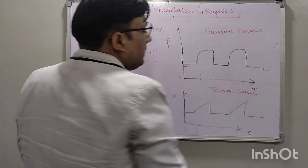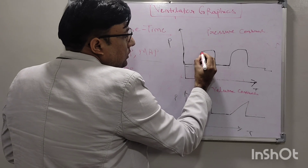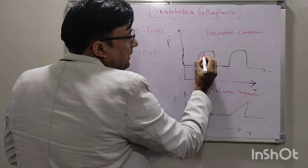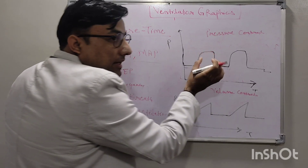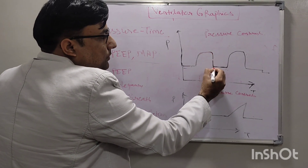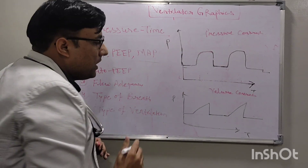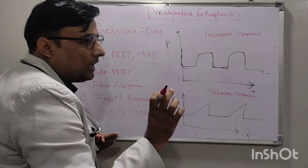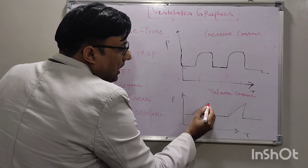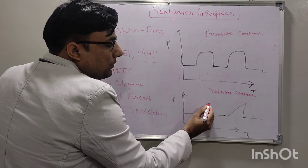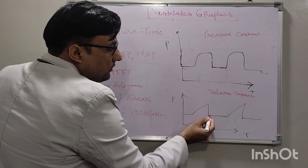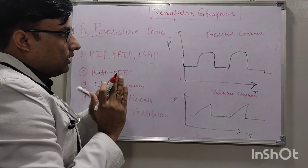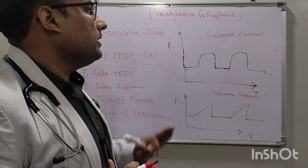In pressure control, we are controlling the pressure, so pressure reaches the set PIP and is maintained for the inspiratory time — producing a plateau — and then drops to expiration, giving a rectangular shape. In volume control, we are controlling the volume, so pressure rises slowly until the required tidal volume is reached, then pressure drops rapidly as expiration starts — giving a fin or triangular shape.